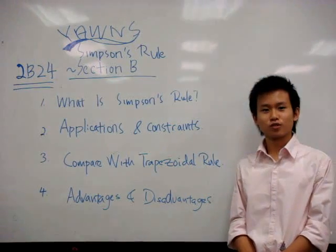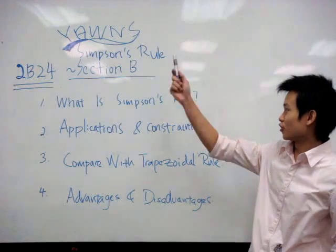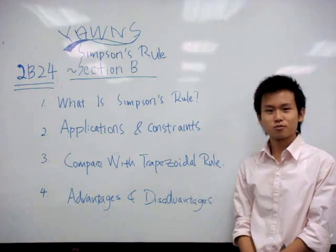Hi everyone, I'm Jia Ho from 2B24. My group name is Yons. Today I'll be talking about Simpson's rule section B.